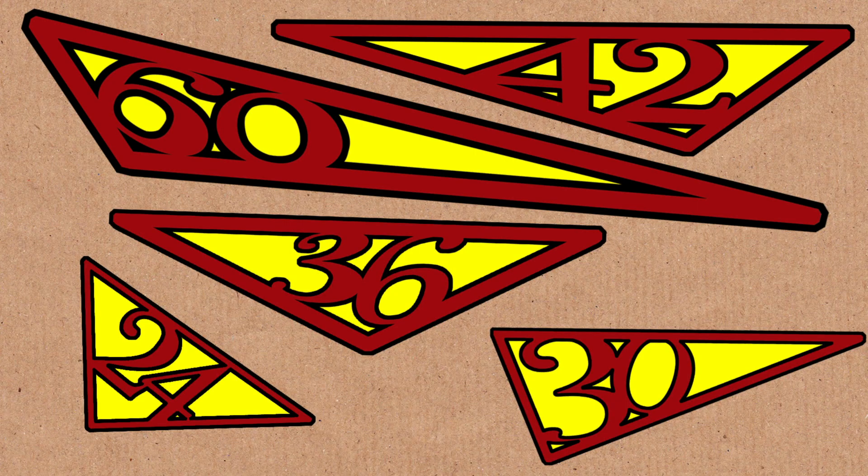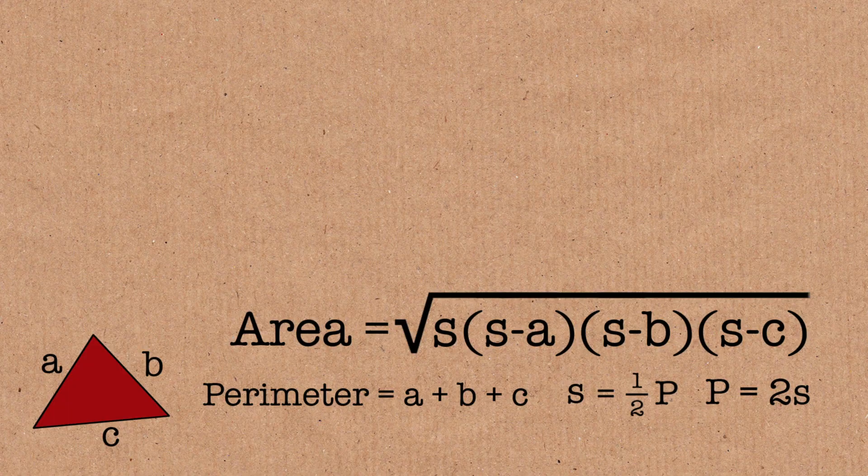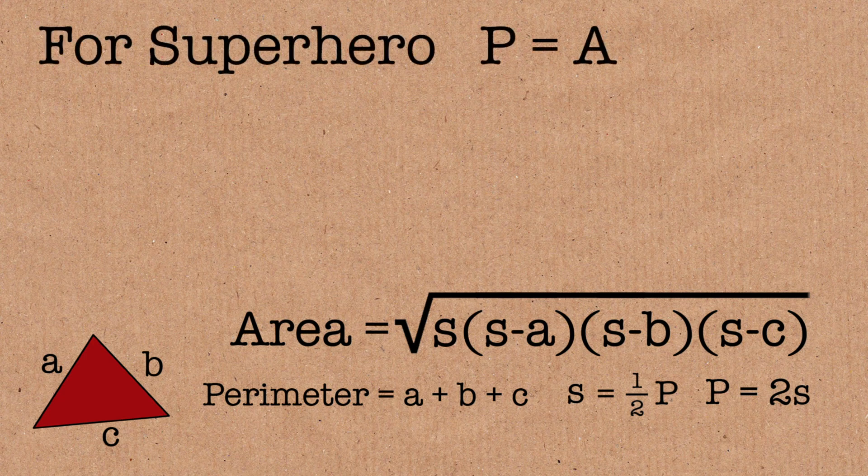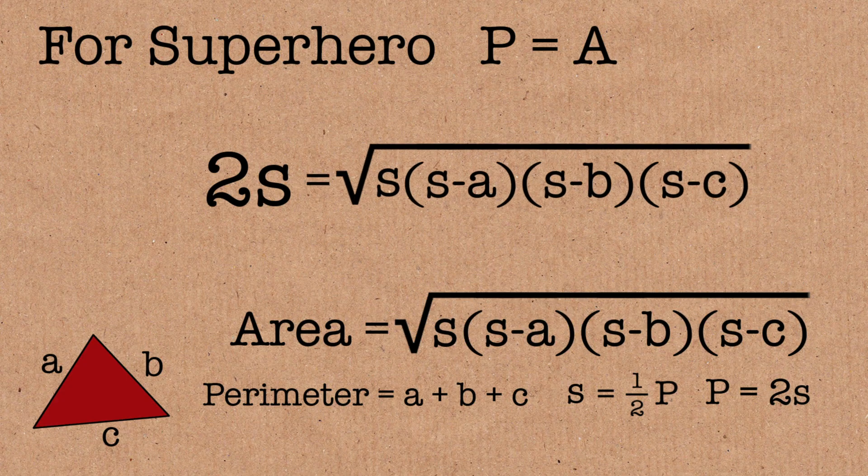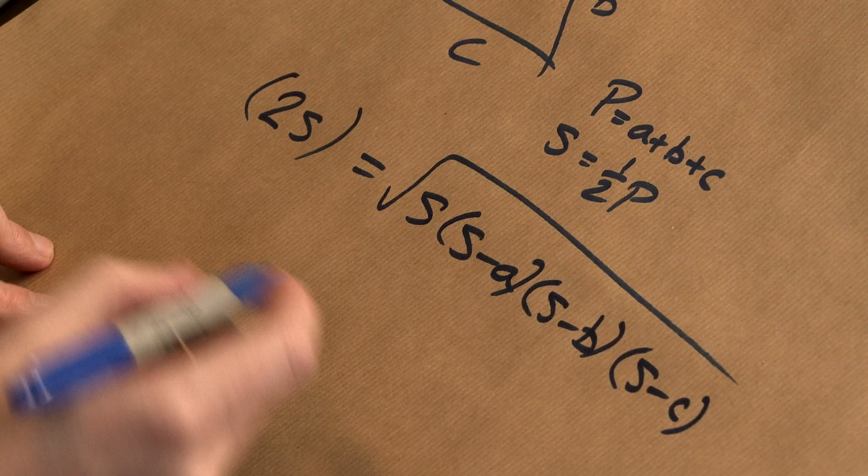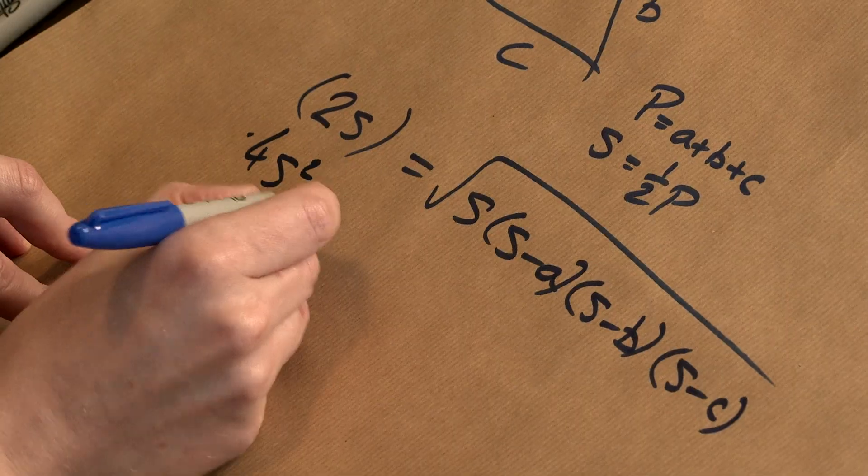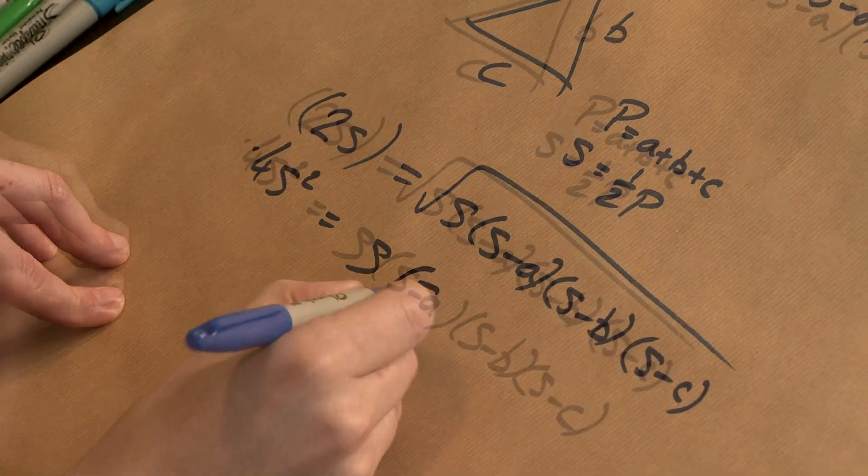But we were interested in triangles that have the same perimeter and the same area. The superheroes. These are the superheroes, we've got a formula for area. So let's do it. Right, we've got area is this, we want it to be the same as 2s, that's the perimeter, is equal to area, which is the square root thing. Alright, oh well, let's just tidy it up, you know, square both sides, 4s squared, it's this stuff.